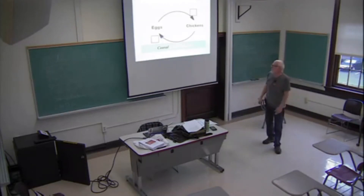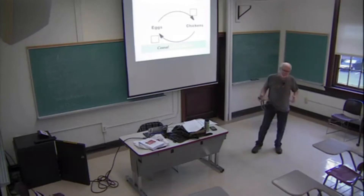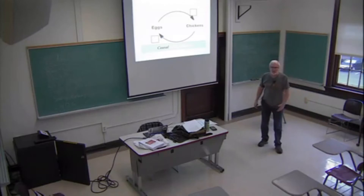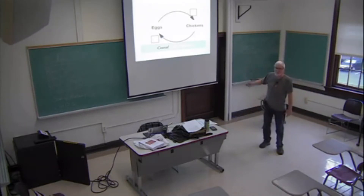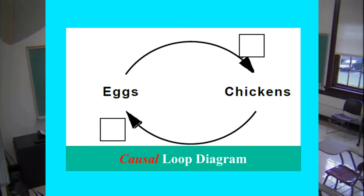This is a very simple causal loop diagram — causal, not casual — because there is no single cause and effect; they cause and effect each other. We have a nomenclature, like learning a language. Chickens cause eggs and eggs cause chickens, and we say they move in the same direction. The nomenclature we use is an S, which indicates that they move in the same direction.